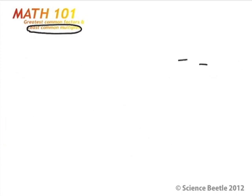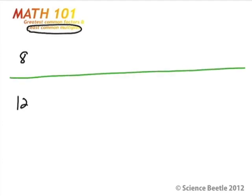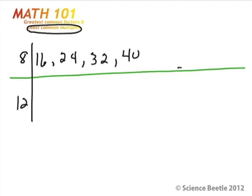Let's try another problem. Let's say we have two numbers: 8 and 12, and let's find the least common multiple common to both. I'll draw a line here to separate these out. Starting with 8: 8 times 2 is 16, 8 times 3 is 24, 8 times 4 is 32, 8 times 5 is 40, 8 times 6 is 48. Let's go ahead and stop there.